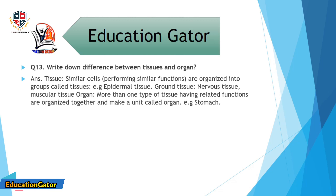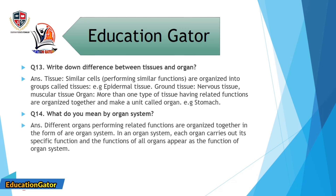Question number 13: Write down the difference between tissue and organ. Ans. Tissue: similar cells are organized into groups called tissues, e.g. epidermal tissue, ground tissue, nervous tissue, muscular tissue. Organ: more than one type of tissue having related functions are organized together to make a unit called organ, e.g. stomach.